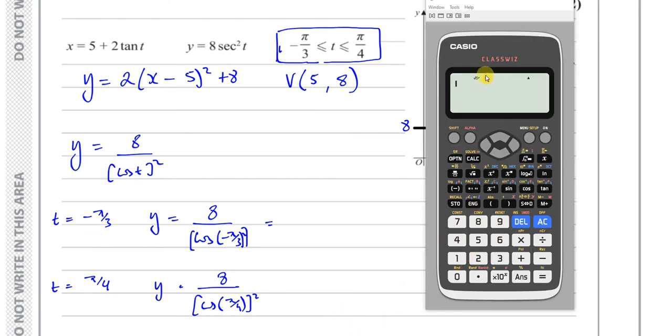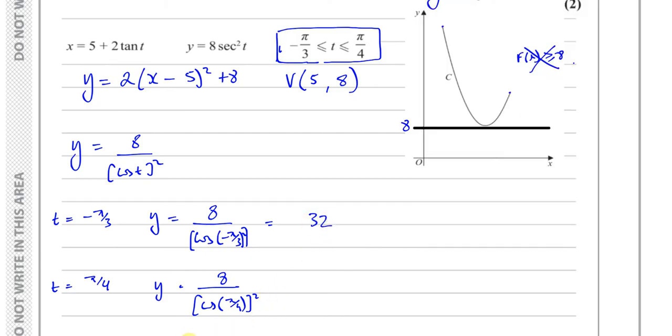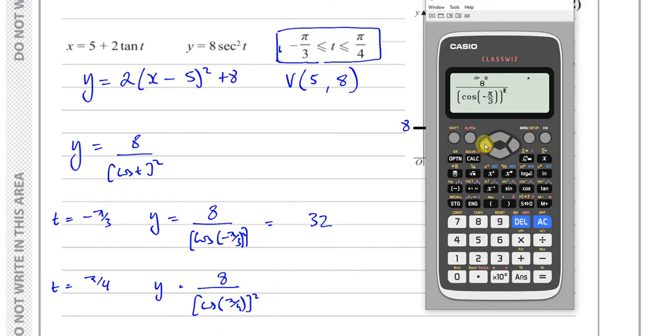Okay, so I've got it in radian mode. So I have to set it up as 8 over, let me put this in a bracket, cosine of negative pi over 3, close the bracket and square that. That gives me 32, so that's 32. And this one will give me, let's change this to pi over 4, change that to 4 and get rid of the minus sign, and that gives me 16.